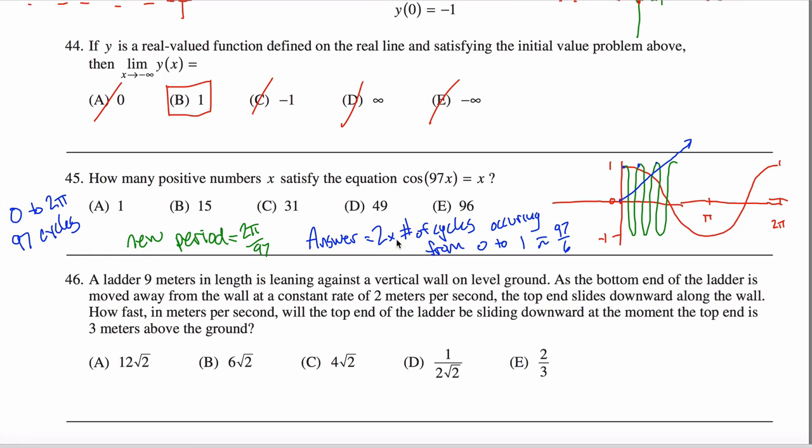So my answer will be two times 97 over six. Well, 97 over six, I don't want to figure out what that is in my head. But if I do two times that, I get roughly 97 over three. And 97 over three, I can do that in my head. 90 over three would be 30. So this is just a little bit more than 30, 32-ish, so approximately 32.